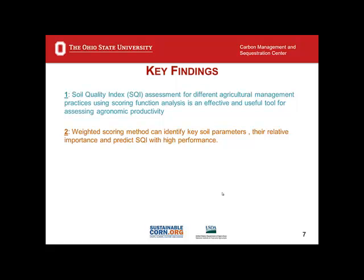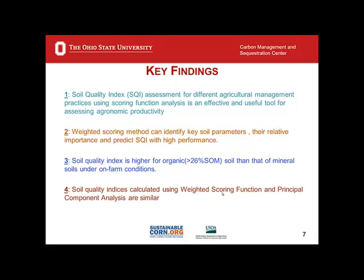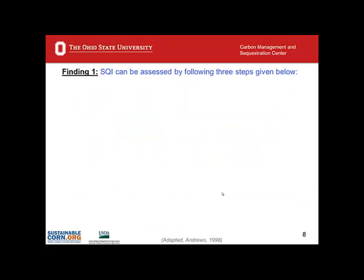The weighted scoring method can identify key soil parameters, their relative importance, and predicts the soil quality index with high performance. Soil quality index is higher, for example, for organic soils — which have very high organic matter content — than for mineral soils, especially under on-farm conditions. Soil quality indices calculated using weighted scoring function and principal component analysis are found to be similar. These are the key findings that we can summarize thus far.